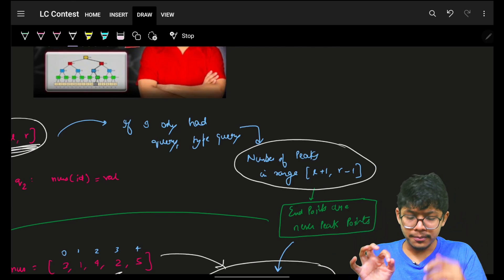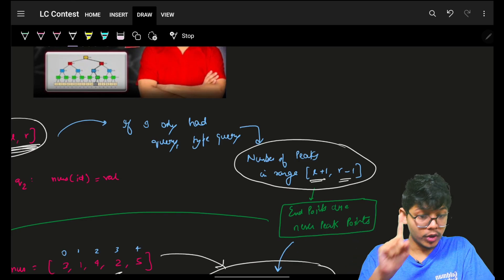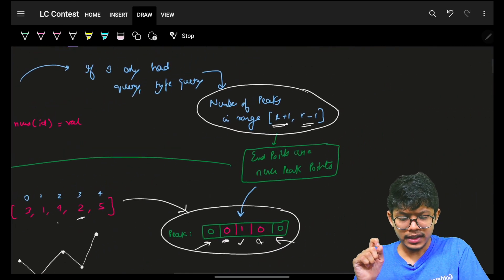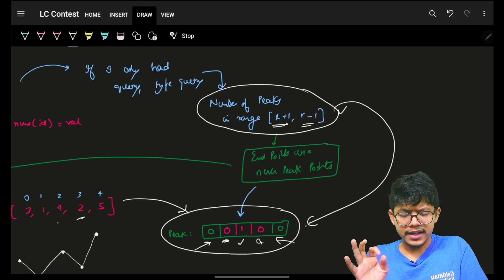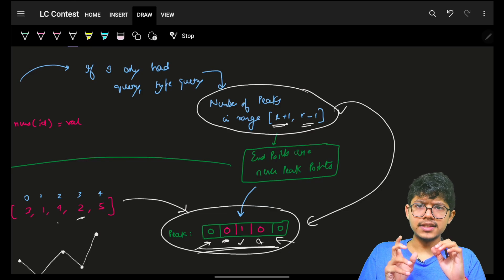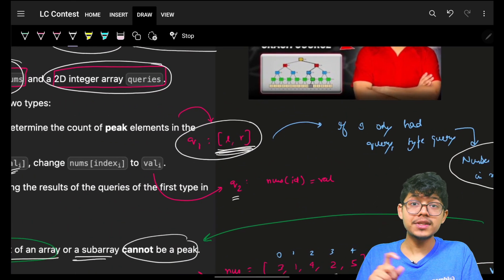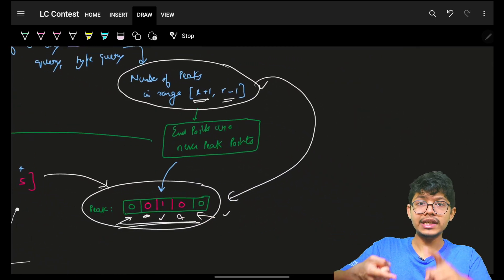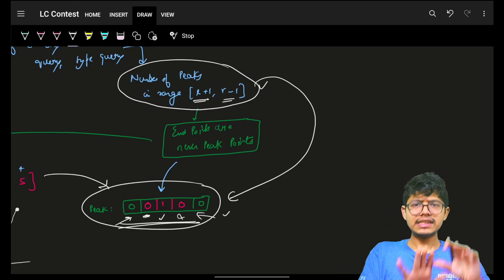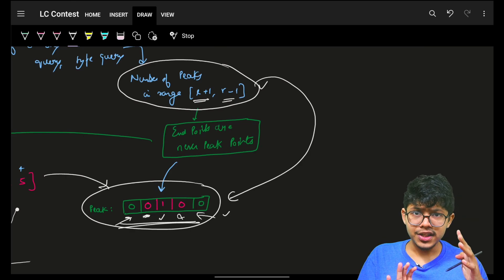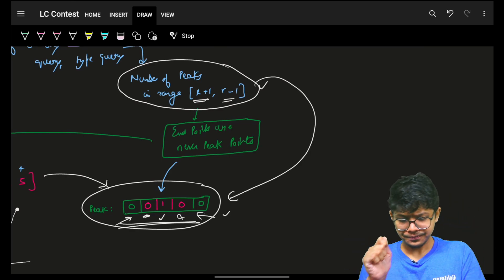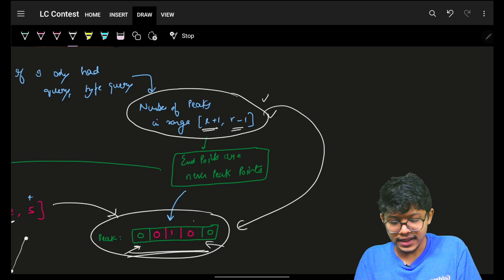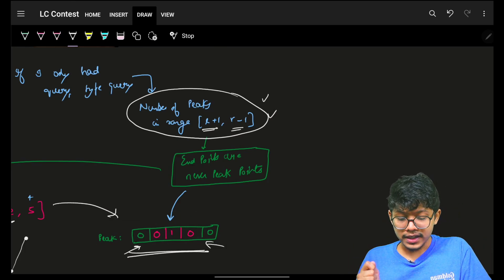If I computed the peak array beforehand and was given range l to r, I would query the range sum from l+1 to r-1, excluding the extreme elements of the subarray. I can just hit a query on the peak array and find the answer. If there were no type 2 update queries, I could simply use prefix sum technique. But since we have updates, I need to use a Fenwick tree or segment tree.